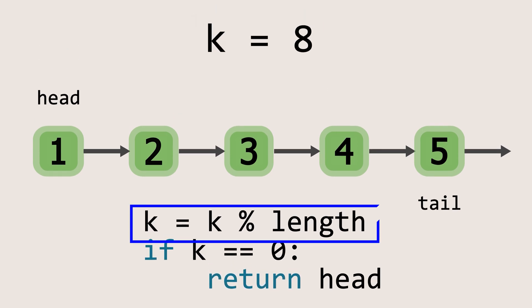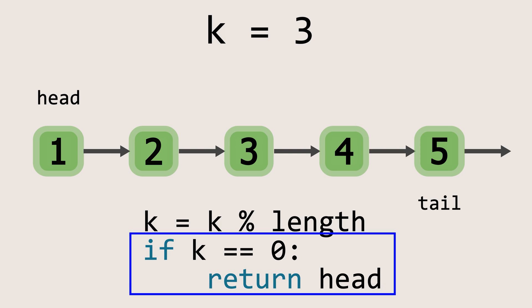Next we calculate the value of k by taking its modulo with the length of the list. So here it will be 3. And after that we check whether k is equal to 0. If k is 0, it means no rotation is needed and we simply return the head of the list.